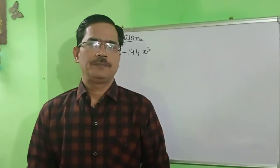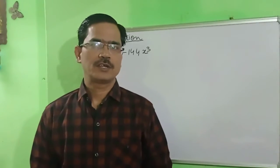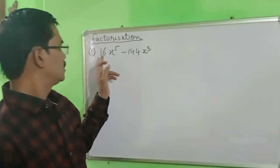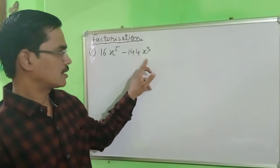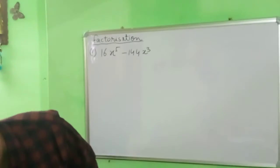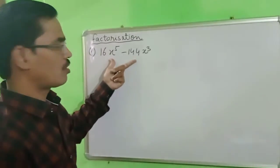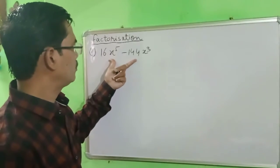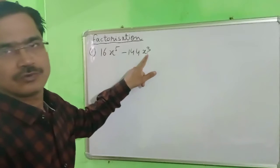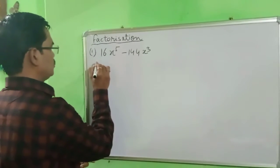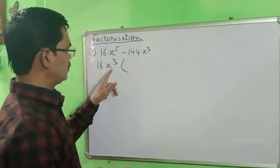Hello everyone, I am Deepak. Today I have taken one topic: factorization. The question is 16x⁵ minus 144x³. In this question we have to take a common factor. We will take 16x³ as common.